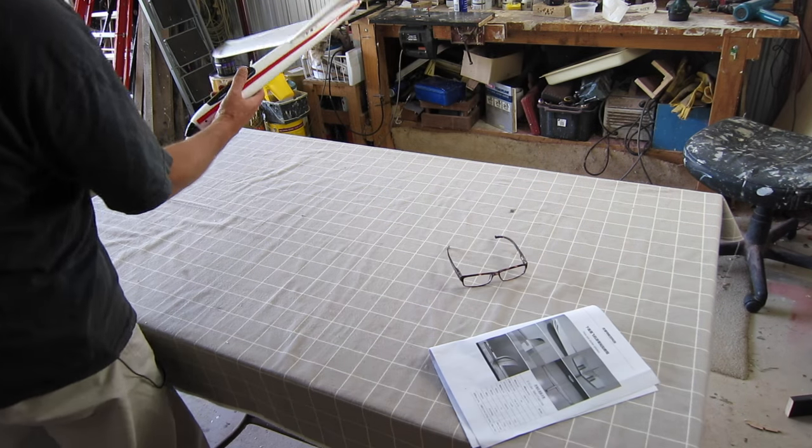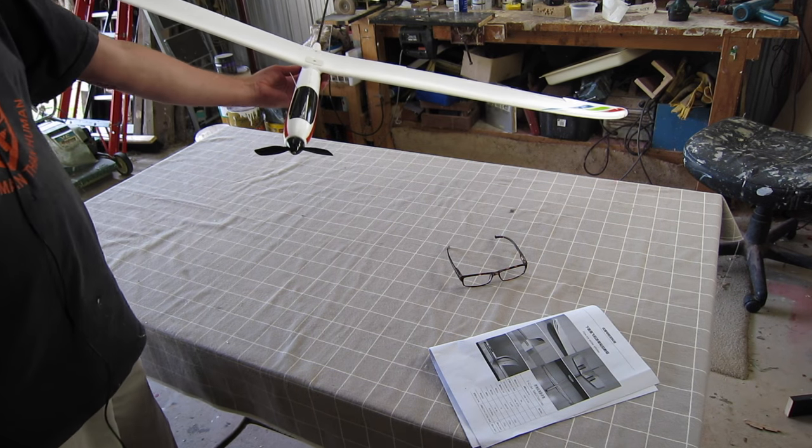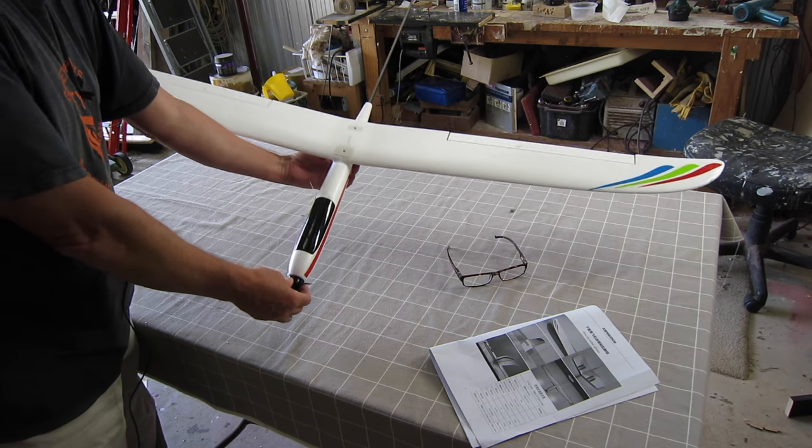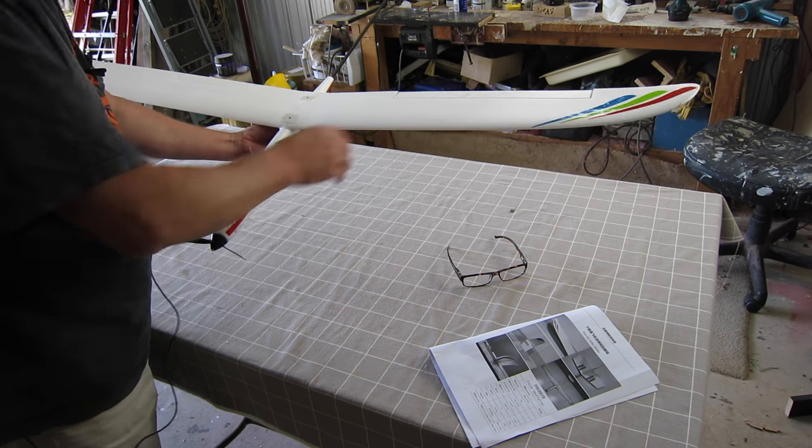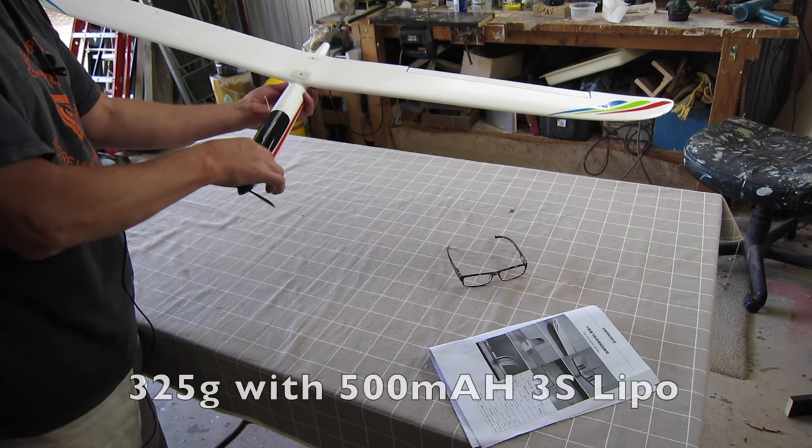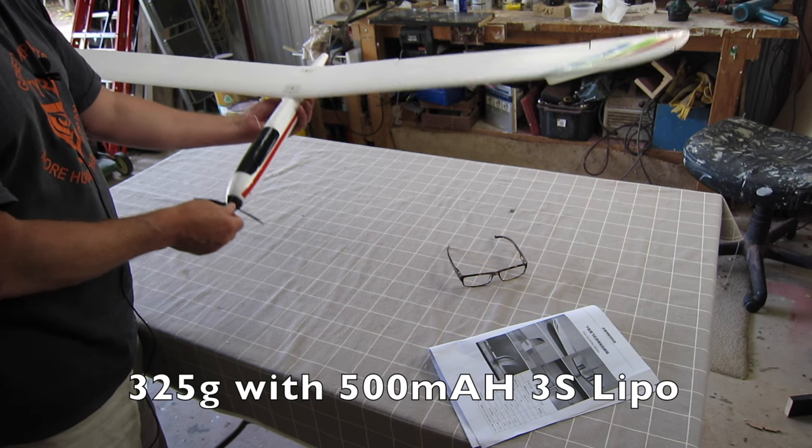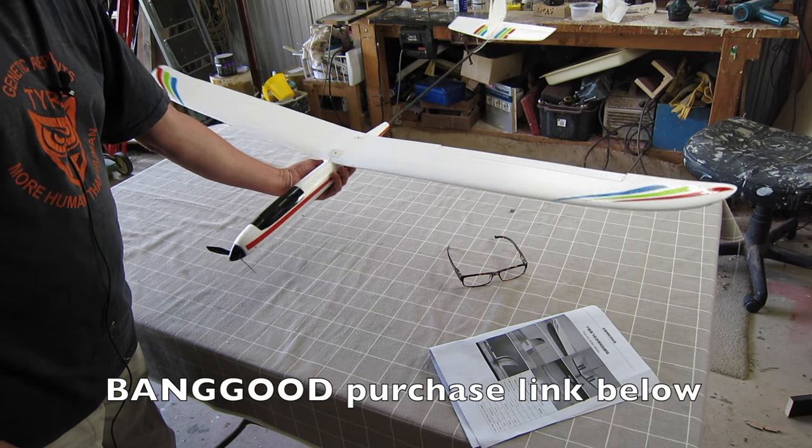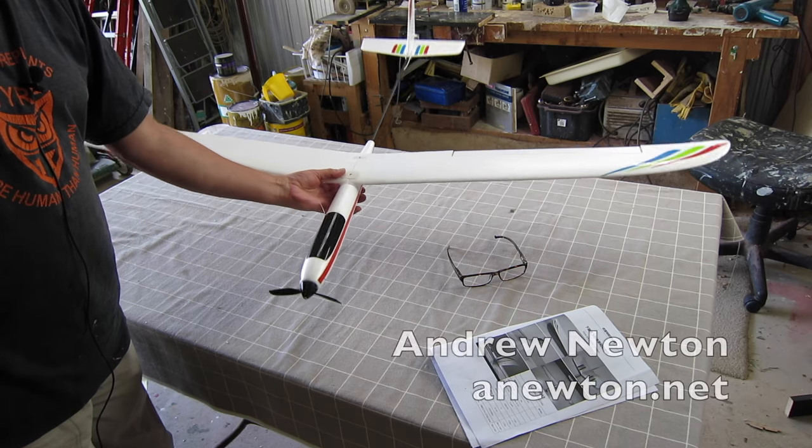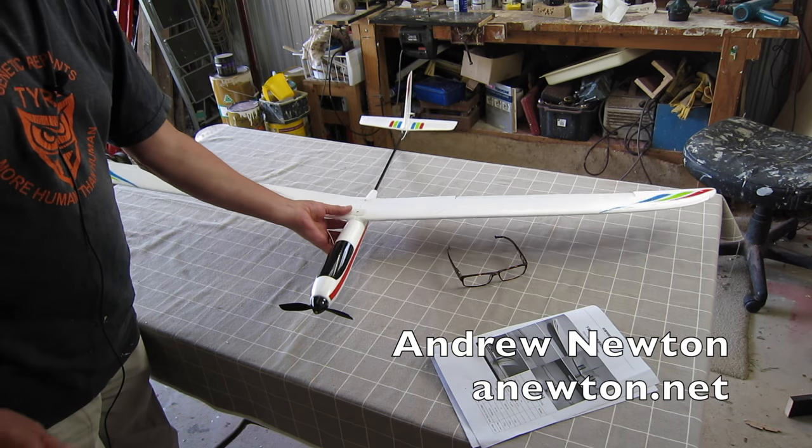So there it is, the Unique Models U-Glider, 1500mm wingspan. I'll have to weigh it and see how much it ended up. Unique Models U-Glider from Banggood. All we have to do now is take it for a fly. Thanks for watching.